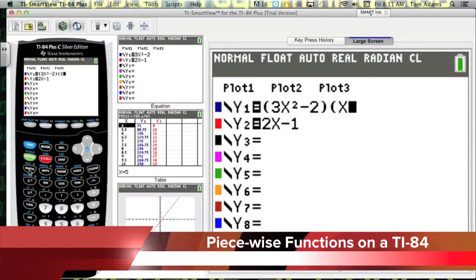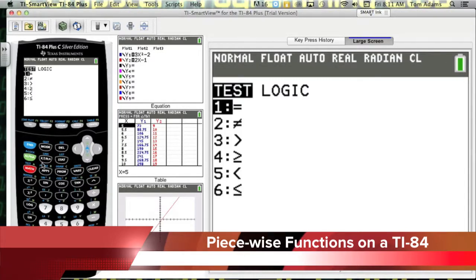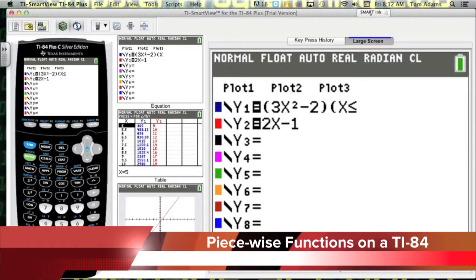I'm going to choose X. Right here is the math button, but notice right above the math button in blue, it says test. So we're going to click second, math, to get into the test menu. And I want the less than or equal to. I clicked it one too many times - less than or equal to, and then I'm going to choose 1.